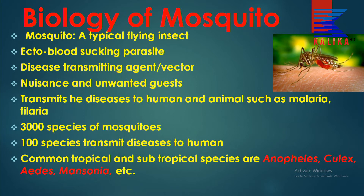Under the topic the biology of mosquito, a mosquito is a typical flying insect. It has got three pairs of legs, two pairs of wings, but one pair is vestigial. Likewise, it is an ecto-blood-sucking parasite — it sucks blood but it is an external parasite.